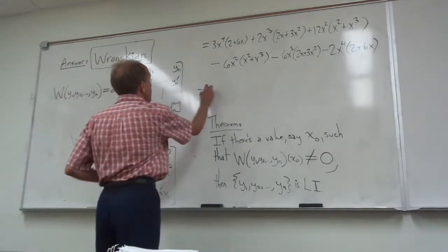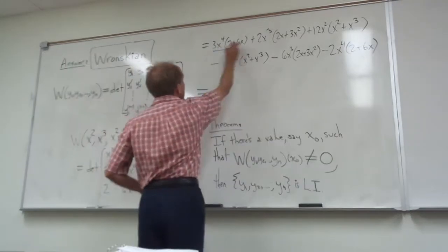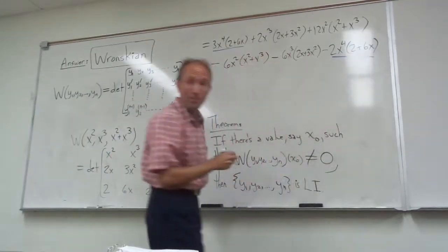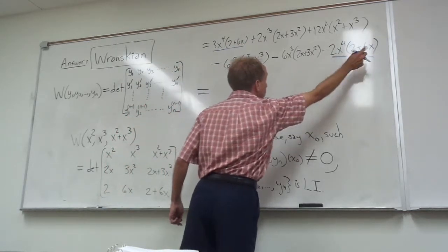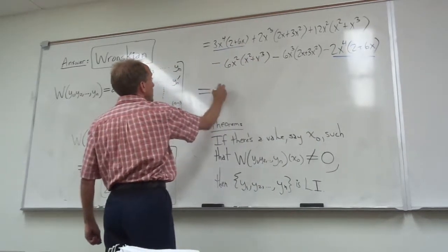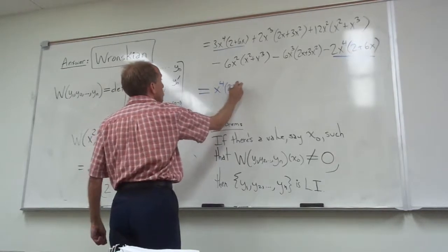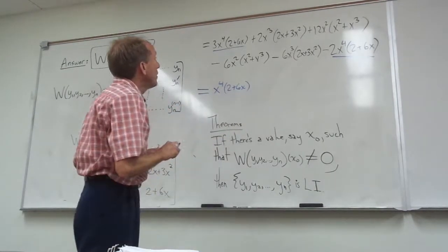And the idea is that after you simplify it all out, it really should cancel down to zero. 3x to the fourth times 2 plus 6x minus 2x to the fourth times 2 plus 6x would just be x to the fourth times 2 plus 6x. And then similarly,